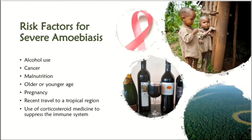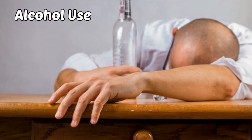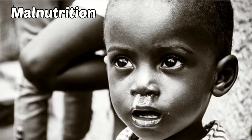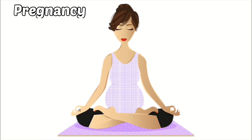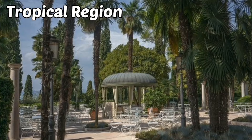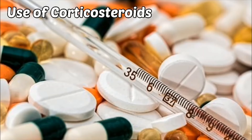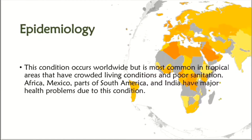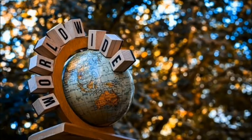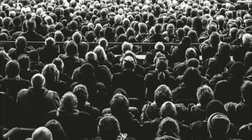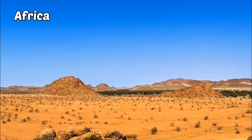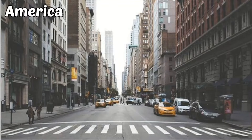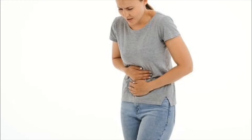Risk factors associated with severe amoebiasis include alcohol use, cancer, malnutrition, older or younger age, pregnancy, travel history — especially recent travel to a tropical region — and use of corticosteroid medicine to suppress the immune system. In short, if a person is immunocompromised. Epidemiology: amoebiasis occurs worldwide but is most common in tropical areas with crowded living conditions and poor sanitation. Africa, Mexico, parts of South America and India have major health problems due to this condition.